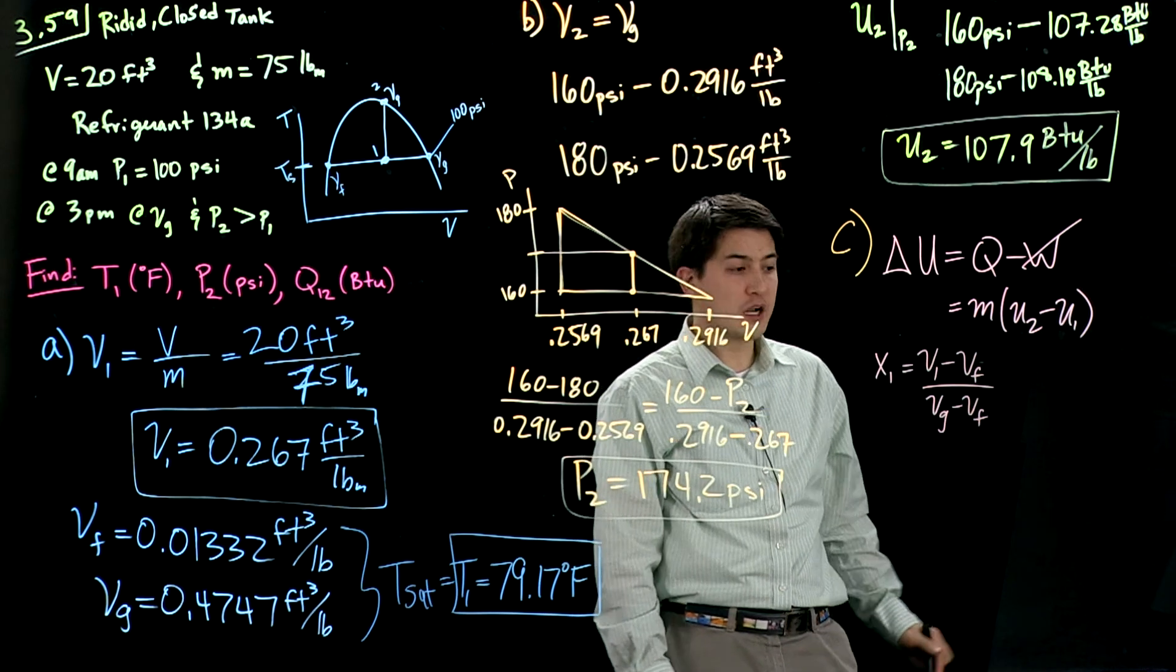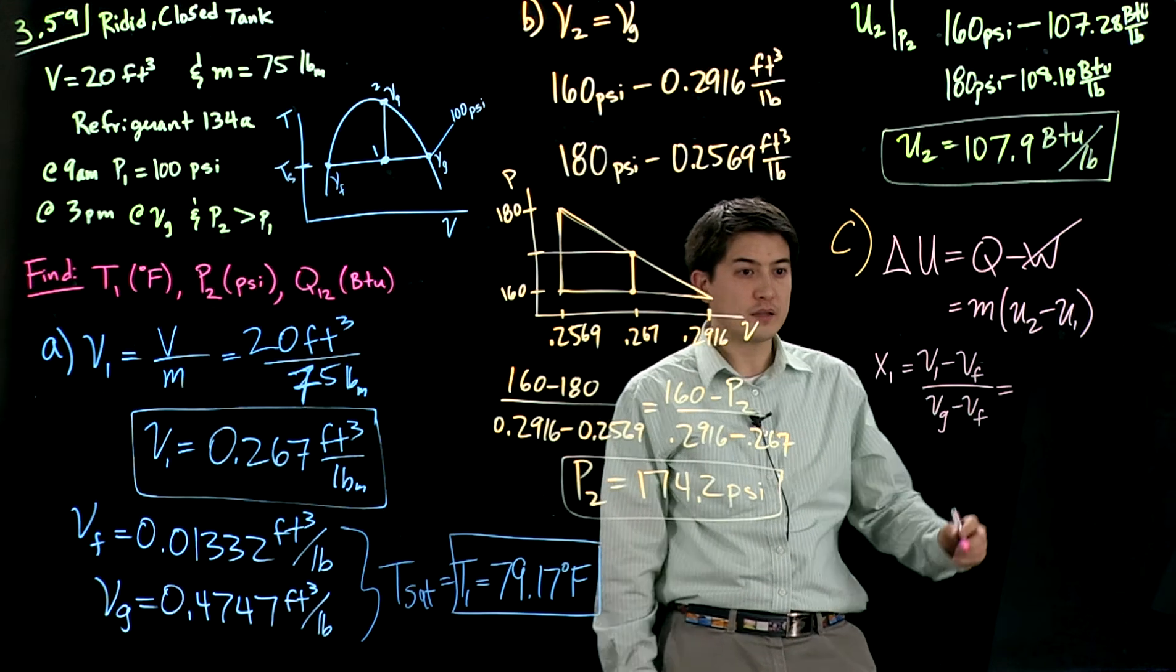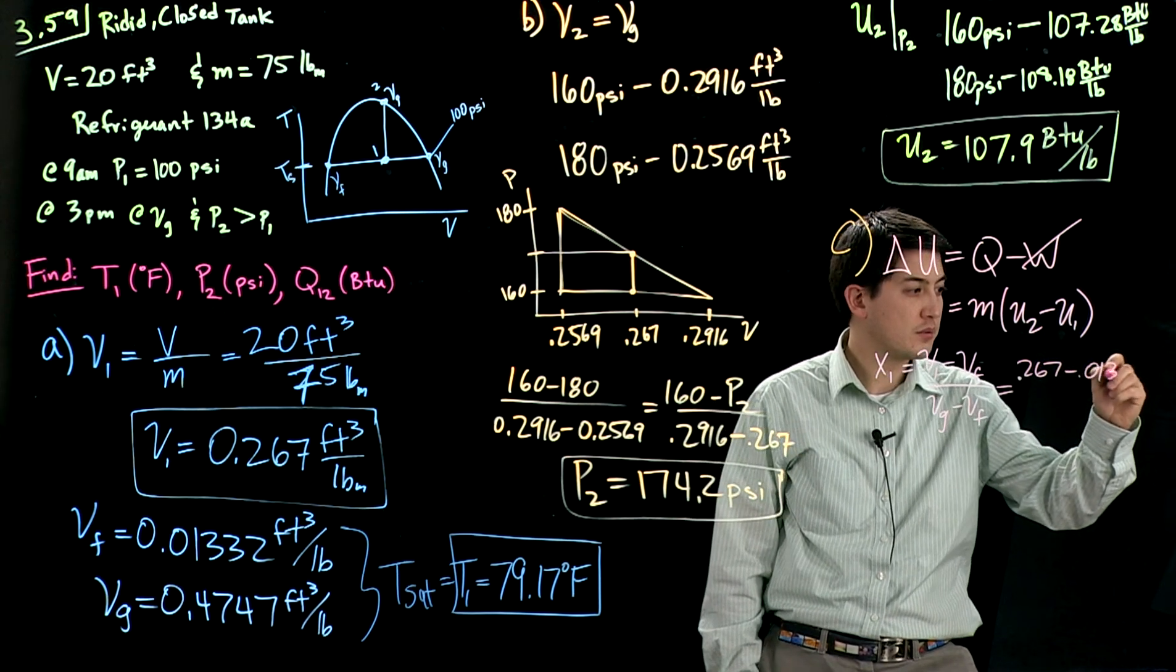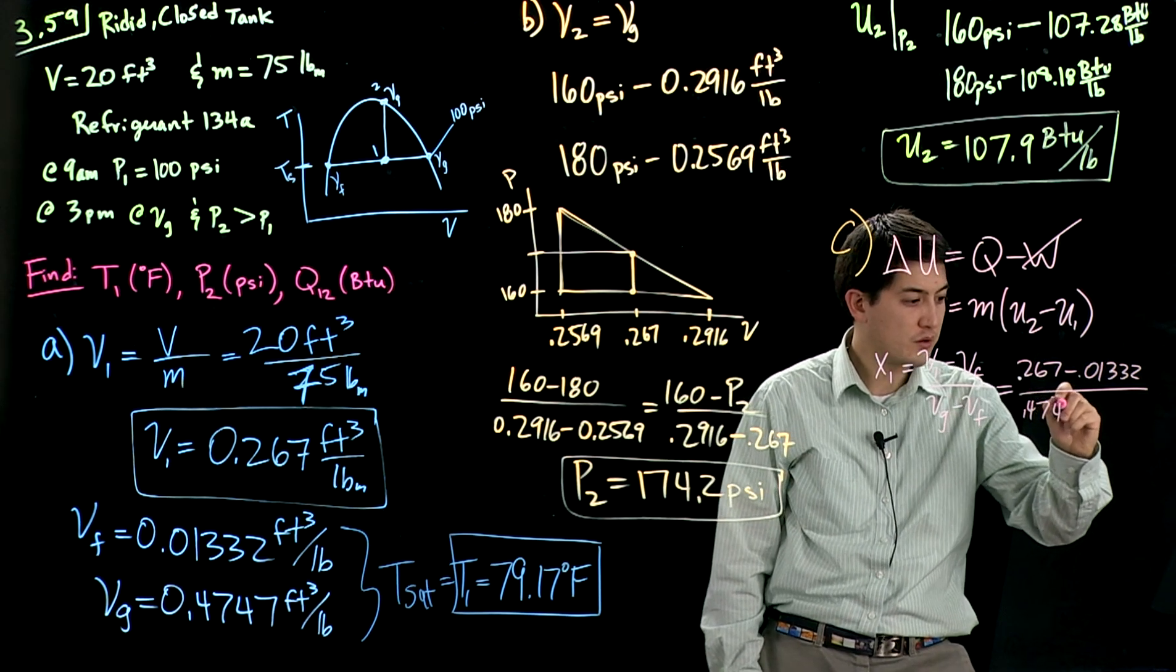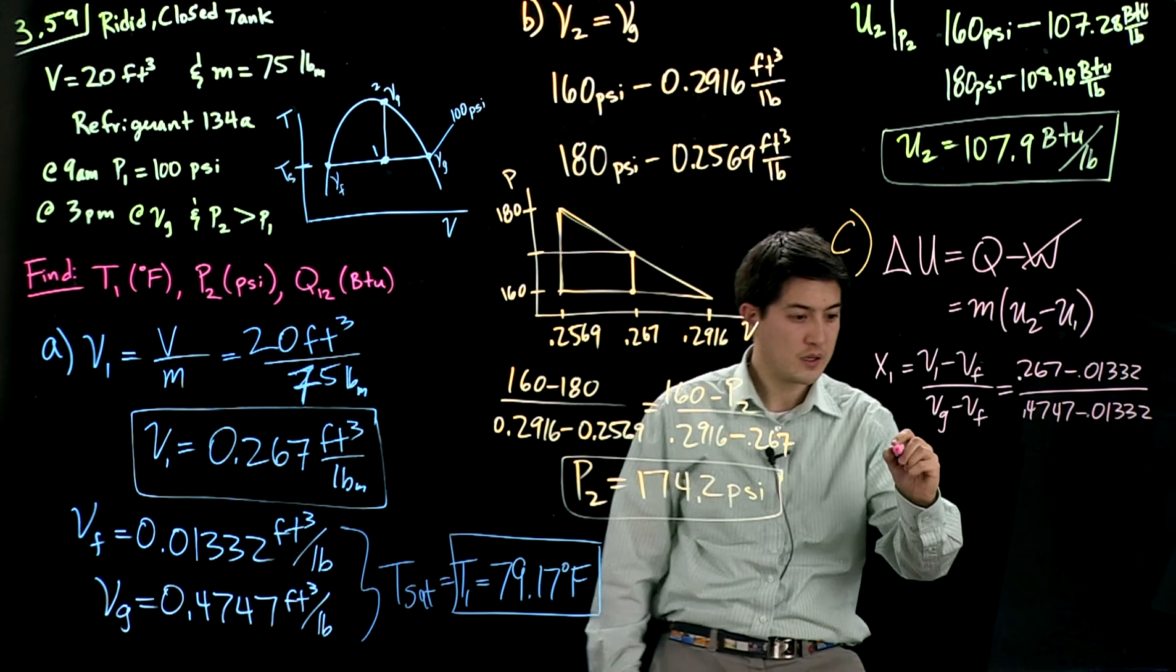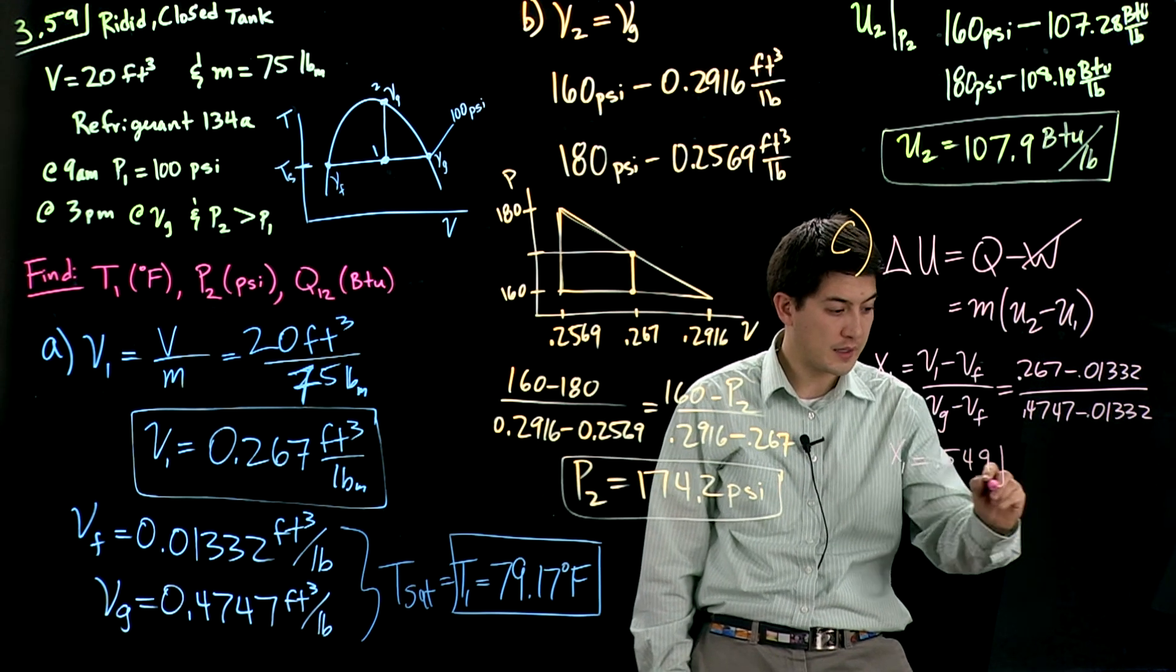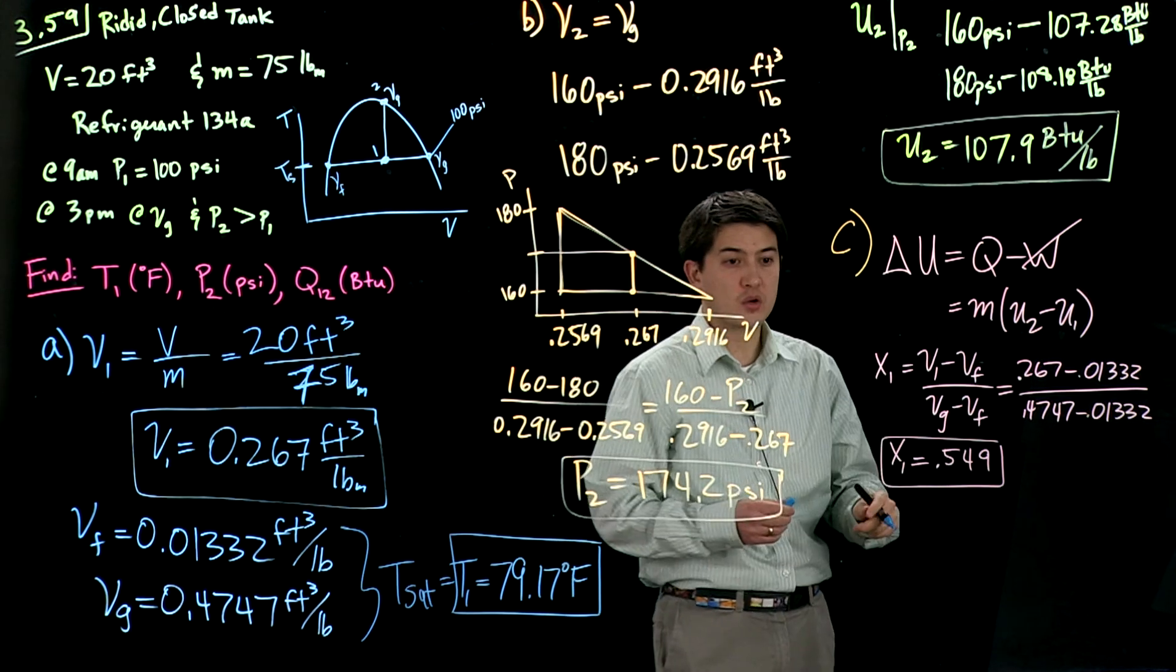We can look up these values from the table and get 0.01332 over 0.4747 minus 0.01332. Quality of state 1 is 0.549. So we have the quality.